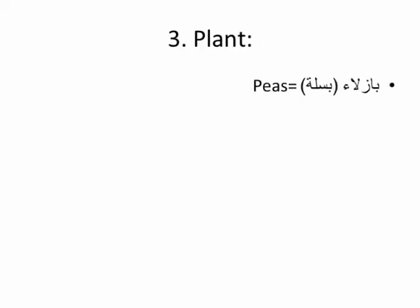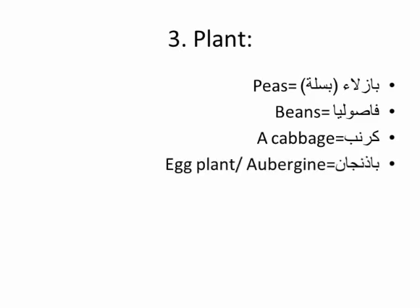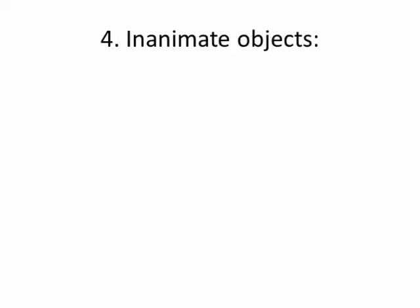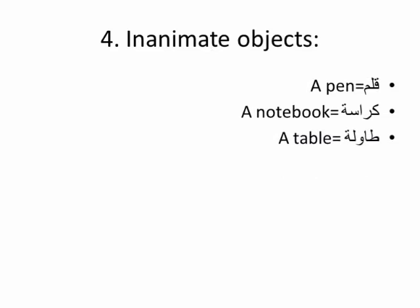For plants we have 'basilla', commonly known as peas; 'fasolia' which means beans; 'kronb' or 'kromb' which means cabbage; 'baadinjaan' which means aubergine or eggplant. Lastly, for inanimate objects we have 'qalam' which means a pen, a notebook, 'tawila' which means a table, 'kursi' which means a chair.